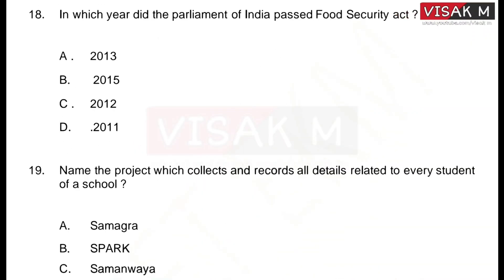In which year did the Parliament of India pass the Food Security Act? The options are: A) 2013, B) 2015, C) 2012, D) 2011. The correct answer is option A, 2013 — that is when the Food Security Act was passed.